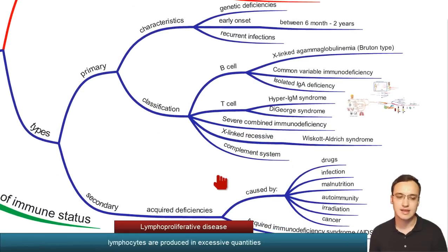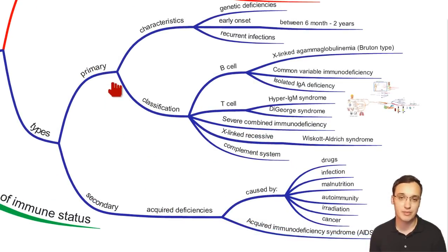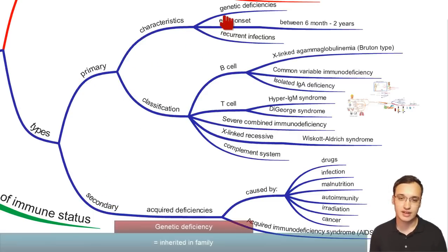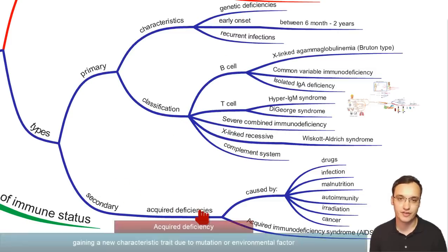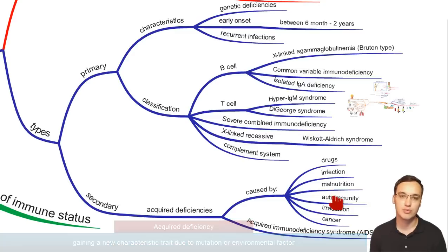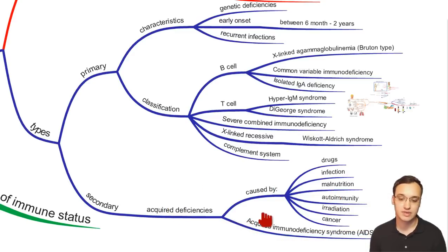With such a defect, we will have an increased susceptibility to infection or lymphoproliferative diseases. We can categorize immunodeficiency into primary or secondary. Primary is a genetic deficiency that is inherited; secondary is an acquired deficiency caused by other things like drugs, infection, malnutrition, or autoimmunity — AIDS being an example of acquired deficiency.